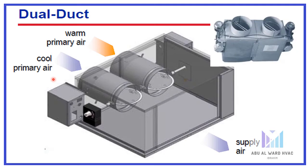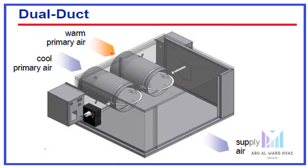Next to the single duct terminal we have the dual duct terminal. A dual duct terminal unit consists of two airflow modulation devices with controls packaged in a sheet metal enclosure. One controls the cool primary air and the other controls the warm primary air. Depending on the method of control, these two air streams may mix in the dual duct unit before proceeding downstream to the space. The VAV dual duct terminal unit is intended for zones that require seasonal cooling and heating, typically the exterior zones of a building. It is seldom used because of the high first cost associated with providing two duct systems.